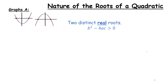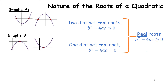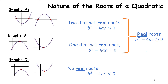To summarize: two distinct real roots means the discriminant is greater than zero; one distinct real root means the discriminant equals zero. Combined, real roots exist when the discriminant is greater than or equal to zero. Scenario three — graph C — gives no real roots, where B² minus 4AC is less than zero. We're really talking about where there is a negative under the square root.